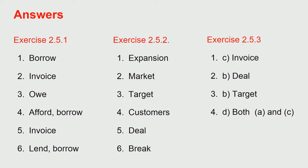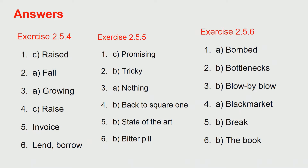Exercise 2.5.3: first C invoice, second B deal, third B target, fourth D — both A and C. Exercise 2.5.4: number 1 C raised, 2 A fall, 3 A growing, 4 C raise, 5 invoice, 6 lend and borrow.